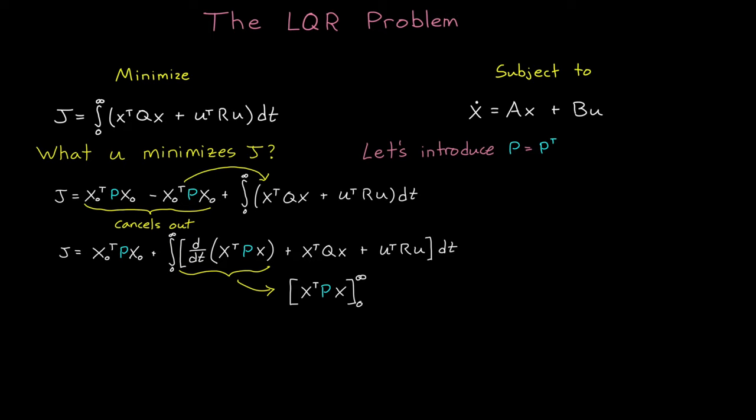We haven't changed the value of J because if we take the integral of the derivative, we're left with x transpose P x that is evaluated at time equal infinity minus the value at time equal zero. But the state goes to zero as time approaches infinity. At least it does for stable systems. And so what we're really left with is just the negative term, exactly like how we started.